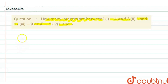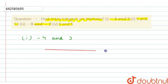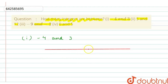So let's proceed with the first part. We have to find between minus 4 and 3. Let's draw an integer line. So on an integer line, there is 0 at the center. On the right side there are positive numbers and on the left side there are negative numbers.